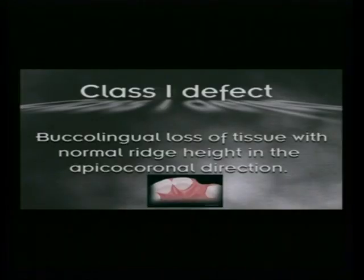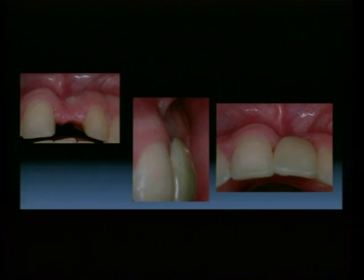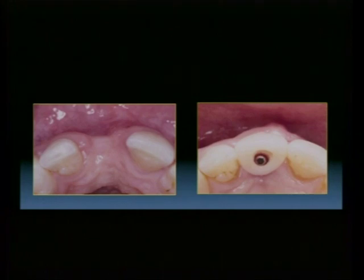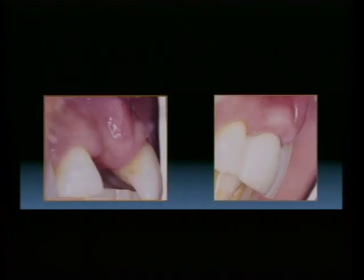A class one defect involves buccal-lingual loss of tissue with normal ridge height in the apical-coronal direction. Two examples show relatively good papillary height adjacent to the defect but significant buccal ridge loss — fitting into the moderate defect category at around three millimeters of soft tissue loss. An alveolar ridge defect with adequate bone but inadequate soft tissues can be improved via an implant combined with soft tissue augmentation to improve the profile next to a dental implant-supported restoration.